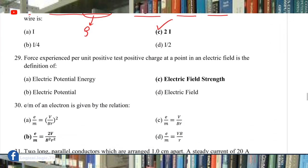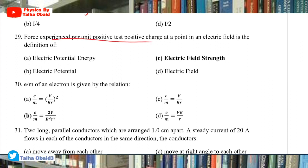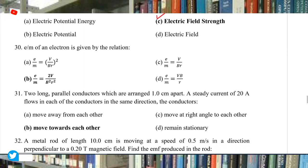Question 29: Force experienced per unit positive test charge is the definition of electric field strength (electric field intensity). Question 30: The e/m ratio of an electron has two formulae: e/m = v/(Br) and e/m = 2V/(B²r²), where small v is speed and capital V is accelerating potential.